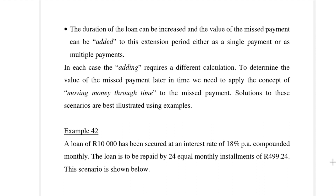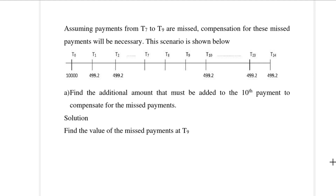In example 42 we have a loan of 10,000 rands secured at an interest rate of 18% per annum compounded monthly, to be repaid by 24 equal monthly installments. We have a timeline to illustrate this. Suppose that payments T7 to T9 are missed and we want to compensate for these payments. In part A, we want to find the additional amount that must be added to the 10th payment.